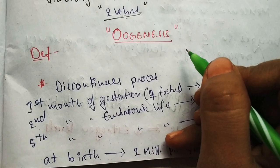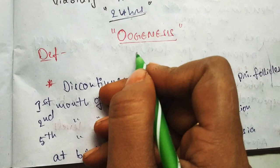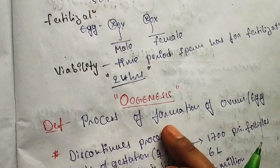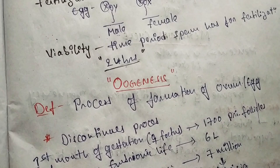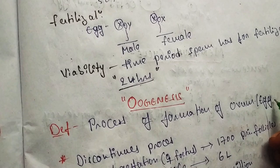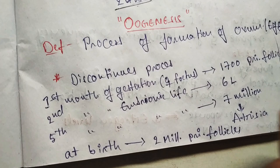Hello guys, today we are talking about oogenesis in the female reproductive system. What is the definition of oogenesis? It is the process of formation of an egg in the female reproductive system. It is called oogenesis.